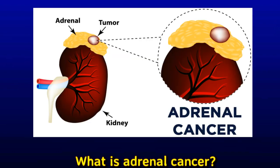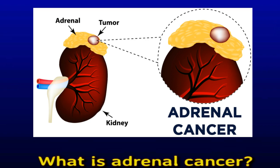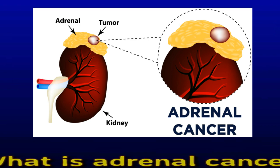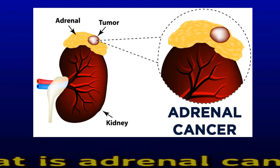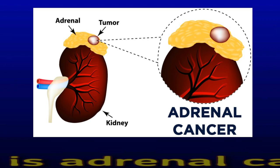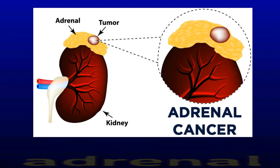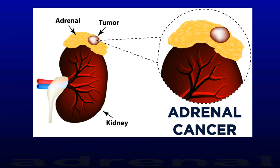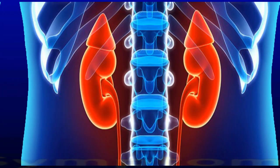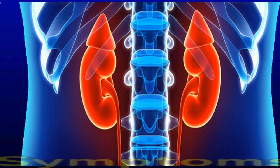Types of adrenal cortex tumors include adenomas, or benign tumors called adrenal cortical adenoma, and carcinomas, or malignant cancerous tumors called adrenal cortical carcinoma. Adrenal tumors are relatively common, affecting three to ten percent of the human population. Most of these are adrenocortical adenoma. Adrenocortical carcinoma, on the other hand, is quite rare — experts estimate that medical professionals diagnose adrenal cancer in roughly one to two people per million every year.